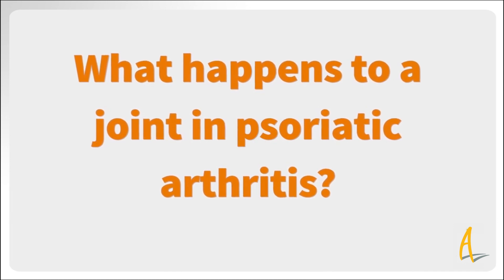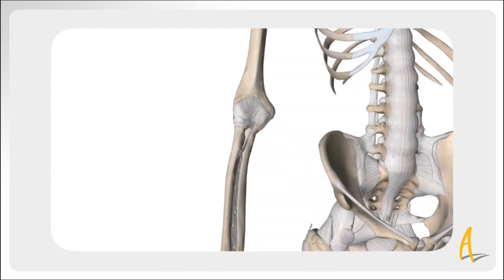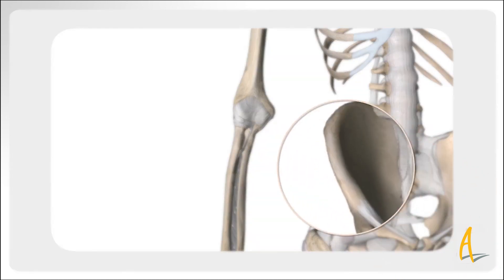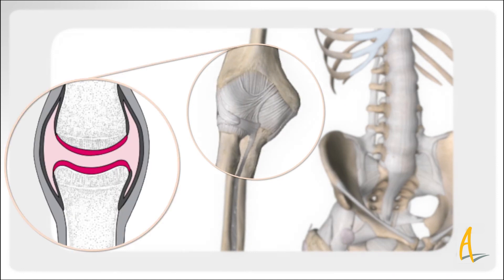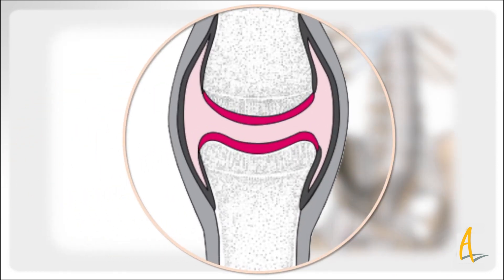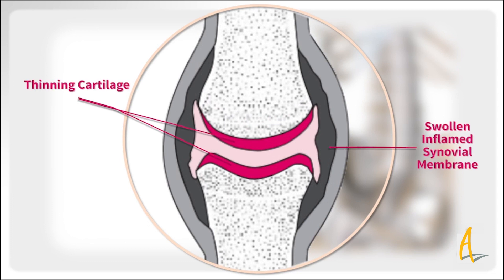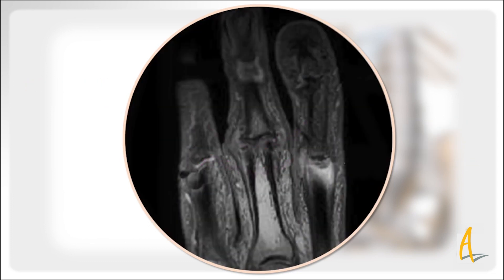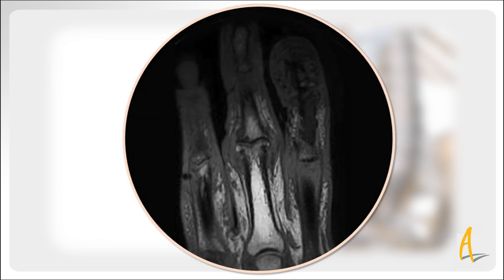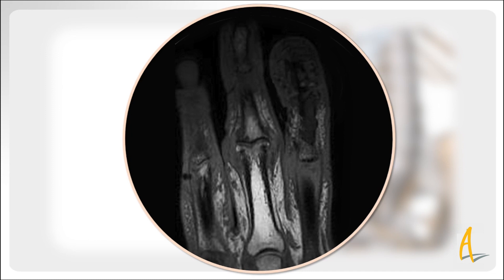In psoriatic arthritis, the synovial membrane lining the joint capsule becomes inflamed and the joint becomes swollen. The cartilage is also affected and begins to wear, which results in a painful, damaged joint. Inflammation can also occur where tendons or ligaments attach to bones.